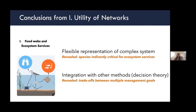In conclusion from these examples: by integrating ecosystem services as nodes in the network using that flexible representation reveals species indirectly critical for ecosystem services, and tells us more broadly about the consequences of species loss in these systems. The second example showed how network tools can be integrated with other methods — here, approaches from decision theory — revealing trade-offs between multiple management goals and some conditions under which those trade-offs could potentially be minimized.